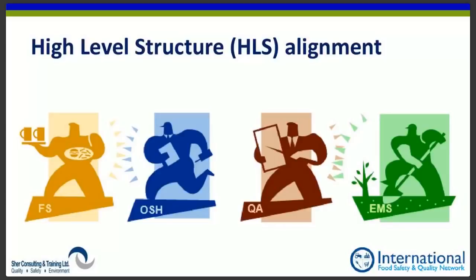The first major impact of the new standard is its alignment to the high-level structure of ISO. With the publication of the new ISO 22000 and the brand-new ISO 45001 in 2018, we have for the first time aligned all four leading management systems: ISO 9001 for quality assurance, ISO 14001 for environmental care, ISO 45001 for occupational safety and employee health — replacing what used to be 18001, which was not an ISO standard — and of course ISO 22000:2018.